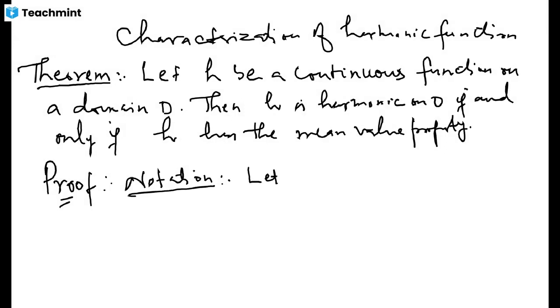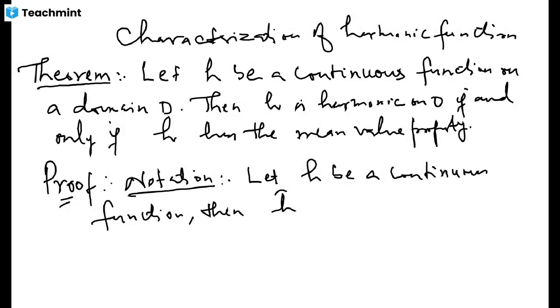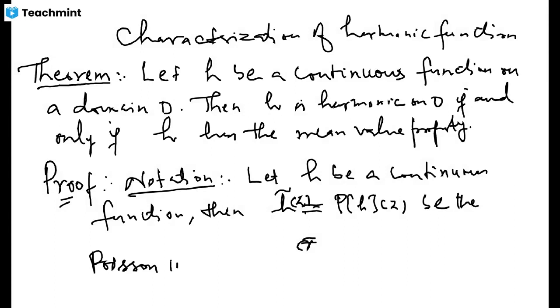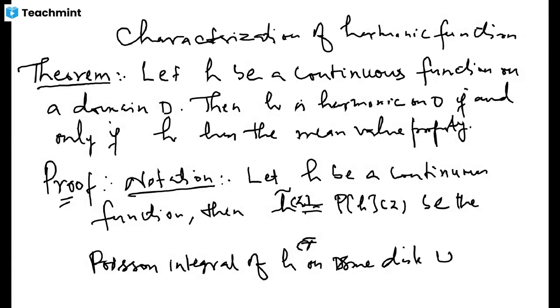Let me first set a notation. Let H be a continuous function. Then H̃, or P of H, denotes the Poisson integral of H on a disk U. Let's fix this notation for the Poisson integral.